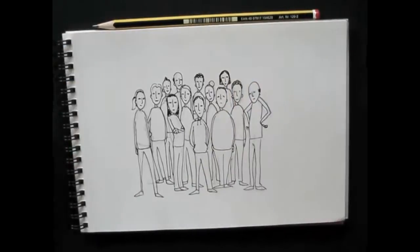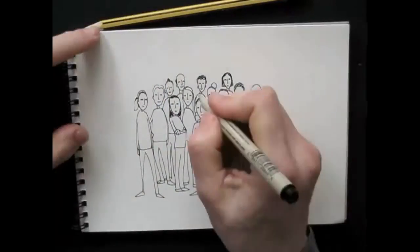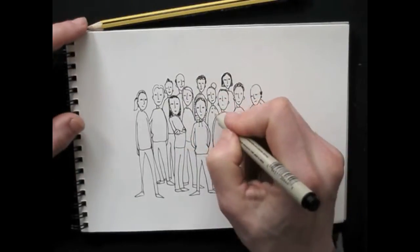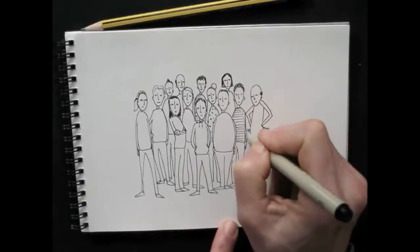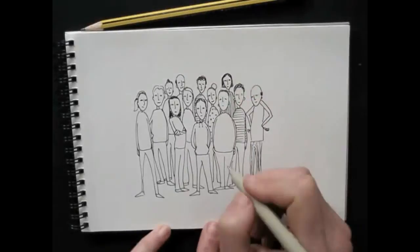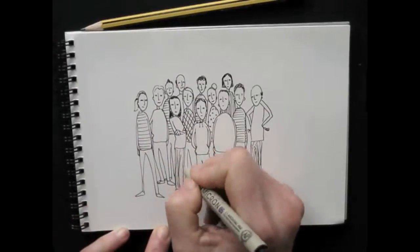Now comes my favorite part. I erase the pencil and then I will add dots and lines making it lively. You can add as much detail as you like. This is just a quick untidy one but you can of course add colors and many crazy details.